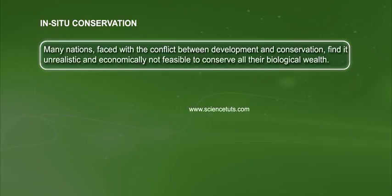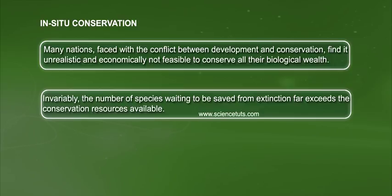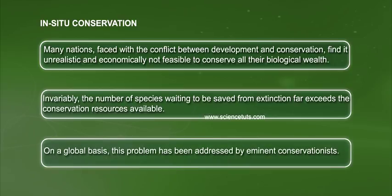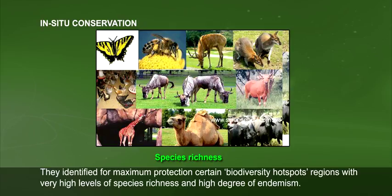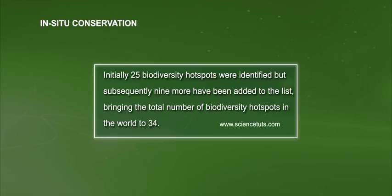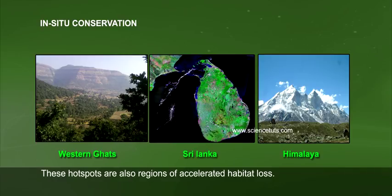Many nations, faced with the conflict between development and conservation, find it unrealistic and economically not feasible to conserve all their biological wealth. Invariably, the number of species waiting to be saved from extinction far exceeds the conservation resources available. On a global basis, this problem has been addressed by eminent conservationists, who identified certain biodiversity hotspots for maximum protection — regions with very high levels of species richness and high degree of endemism. Initially 25 biodiversity hotspots were identified, but subsequently 9 more were added, bringing the total to 34. These hotspots are also regions of accelerated habitat loss.